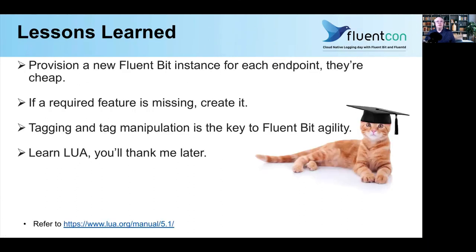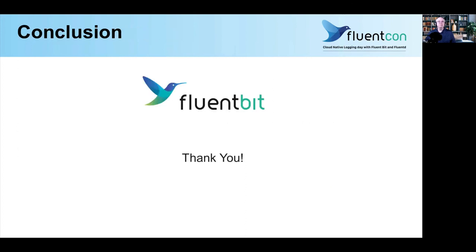As far as lessons learned: provision a new instance for each endpoint — they're cheap. Also, if you need a new feature, add it; there are plenty of SDKs and examples. The tagging and tag manipulation is one of the keys to FluentBit's agility. Thank you for joining my talk — I hope you enjoyed it.